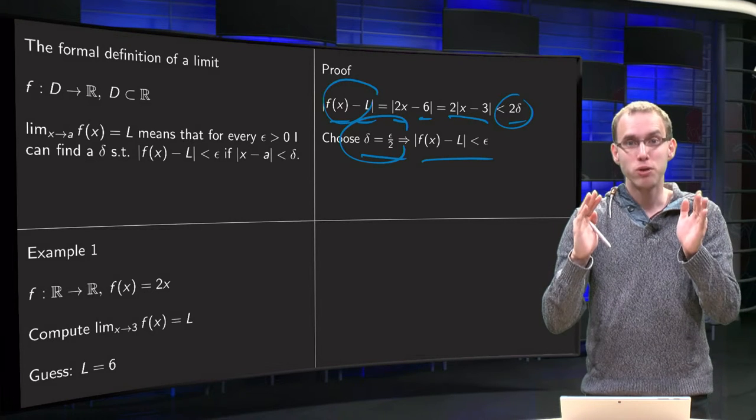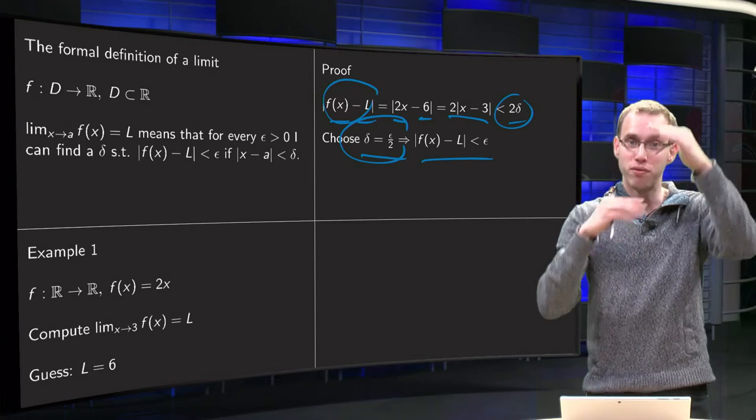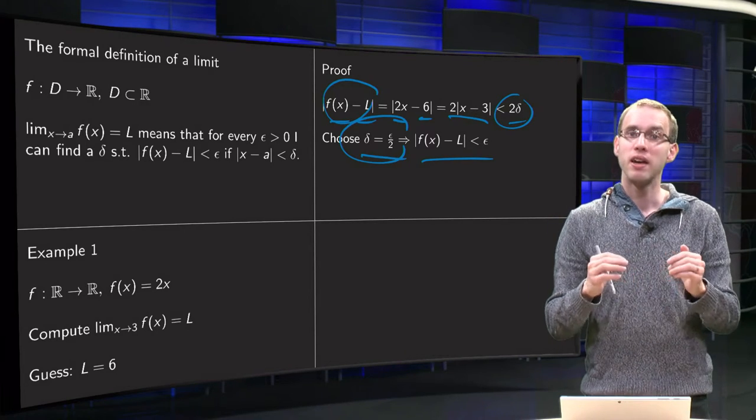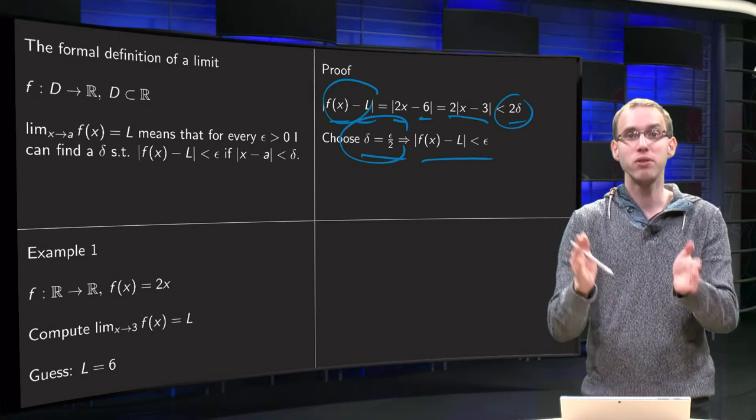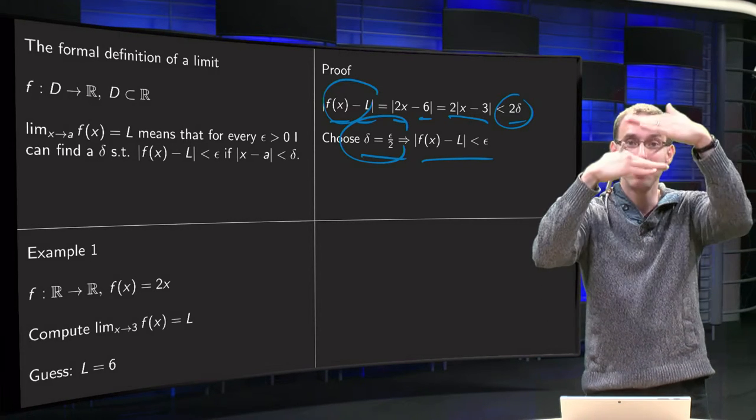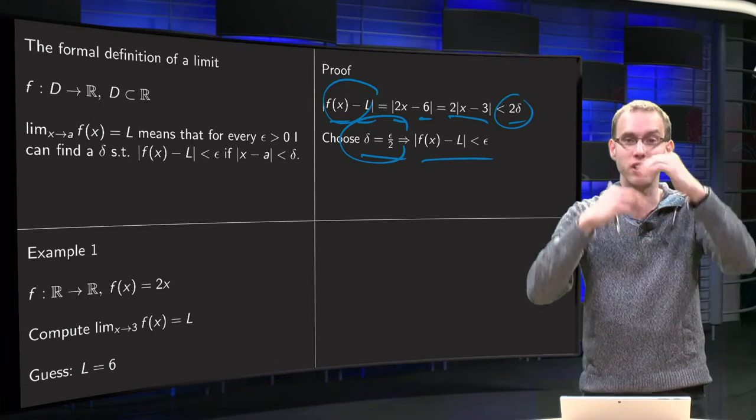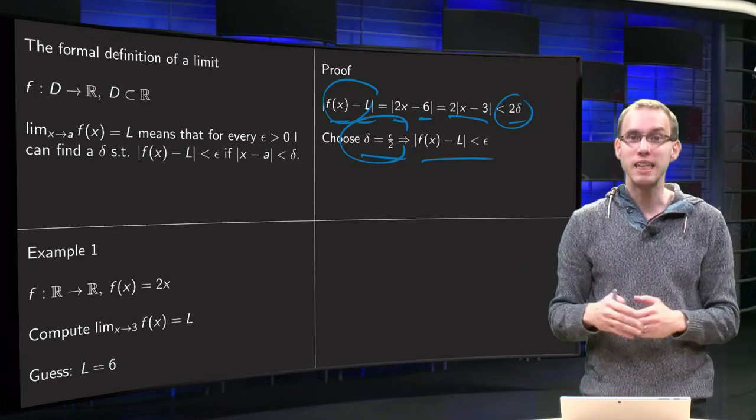So all values in the interval 2.95, 3.05 will be in the interval 5.9, 6.1. And if someone gives you a smaller epsilon, you give a smaller delta. And then all those values in the smaller interval will be at a smaller distance from 6. That's the idea.